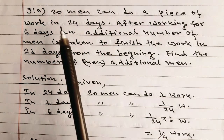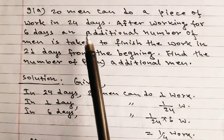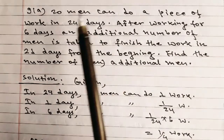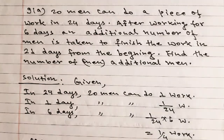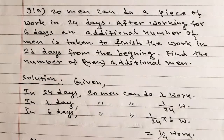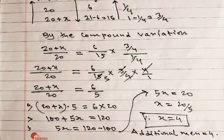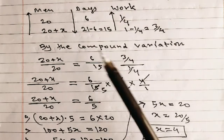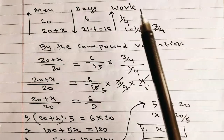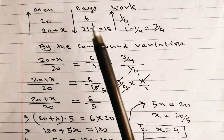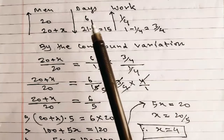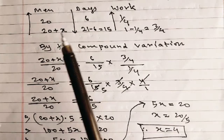In six days, 20 men can complete 1/4 of the work. After six days, additional men are taken to finish the remaining work in 21 days from the beginning. Let's make a table and apply the method of ratio and proportion. We are given: men, days, and work. Men = 20, days = 6, work done = 1/4.